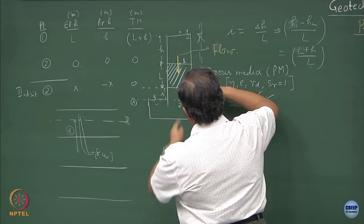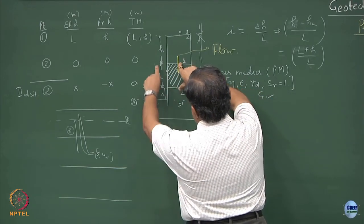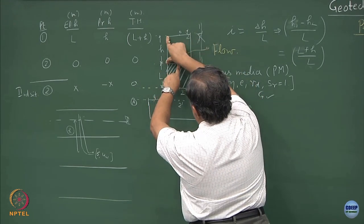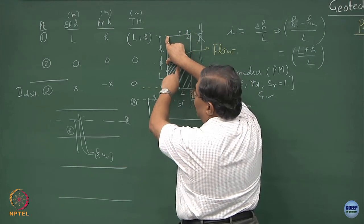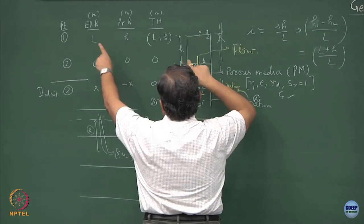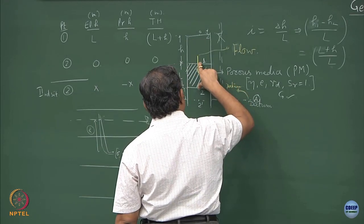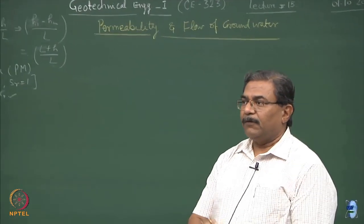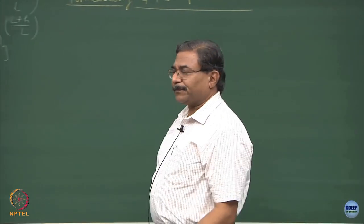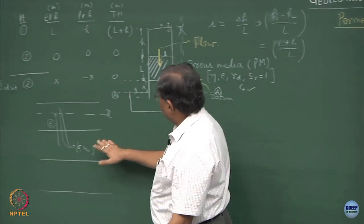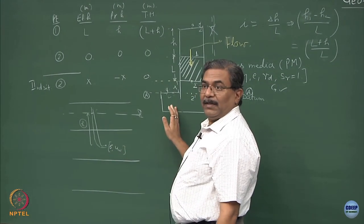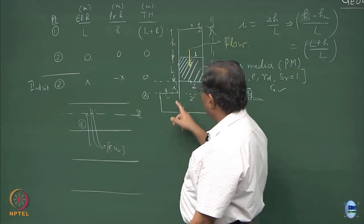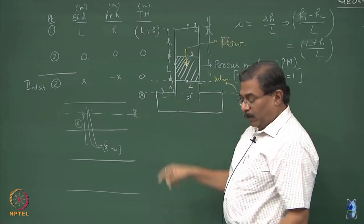This gradient is going to cause flow through the porous media. The flow is shown by the yellow arrow. At point 1, if the datum is fixed here, the elevation head is L. If a piezometric tube is installed, it rises to L plus H. So the pressure head is H at this point, elevation head is L, and total head at this point is L plus H.